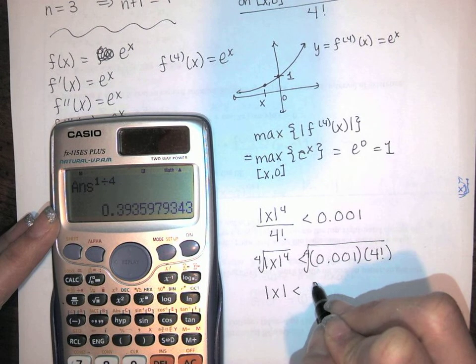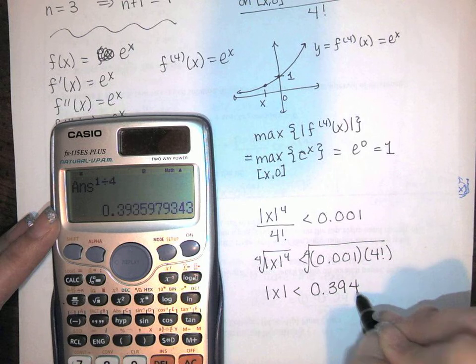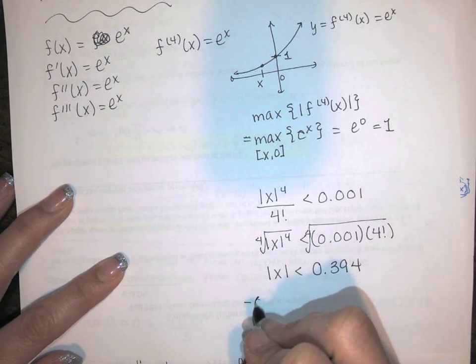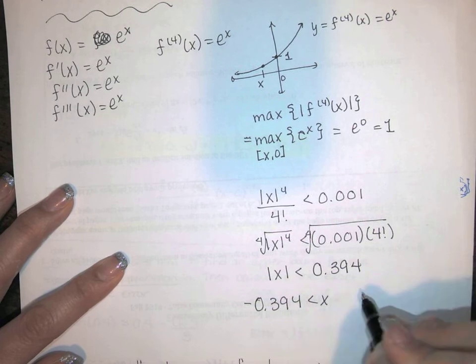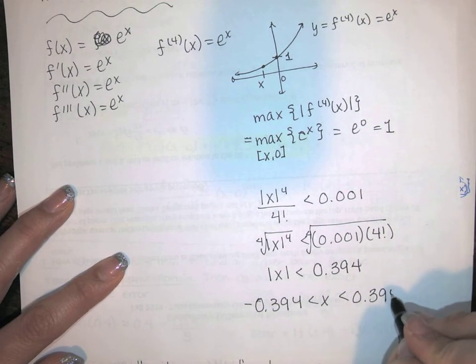And you get the absolute value of x has to be less than 0.394 approximately. So that means x has to be between negative 0.394 and positive 0.394.